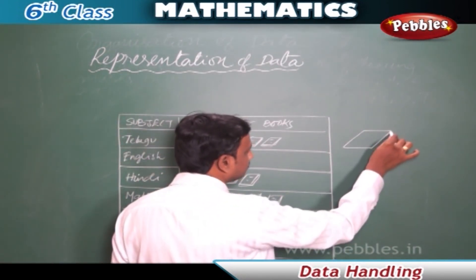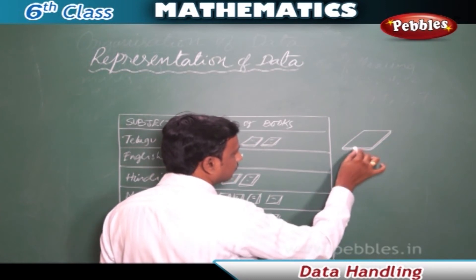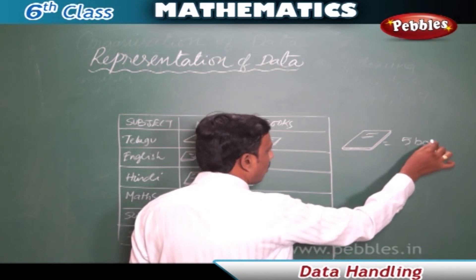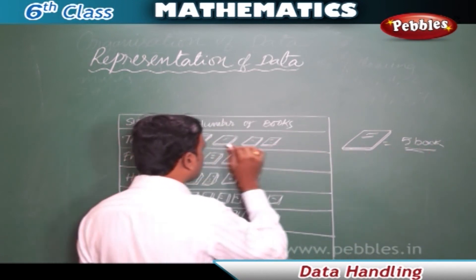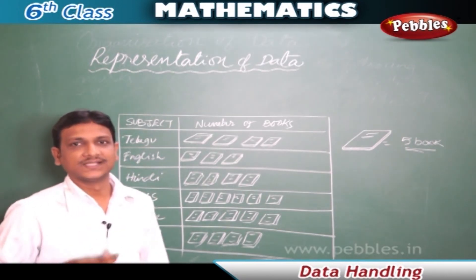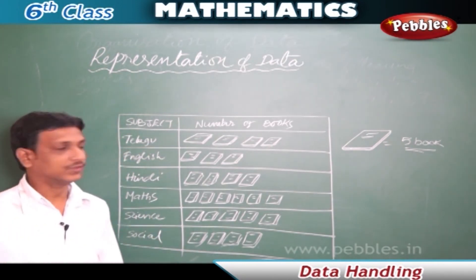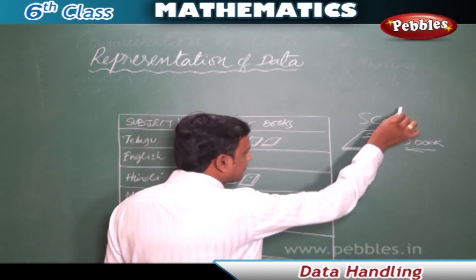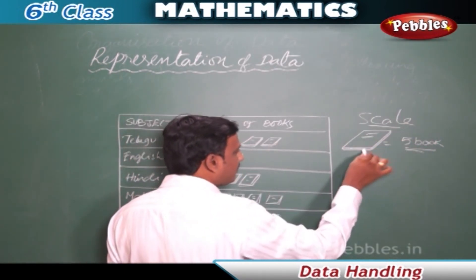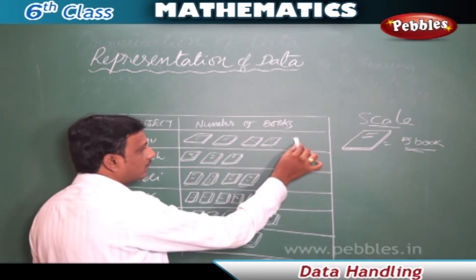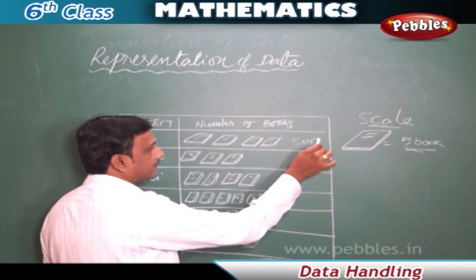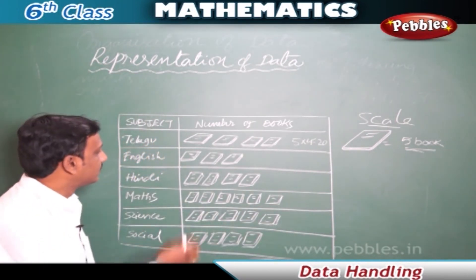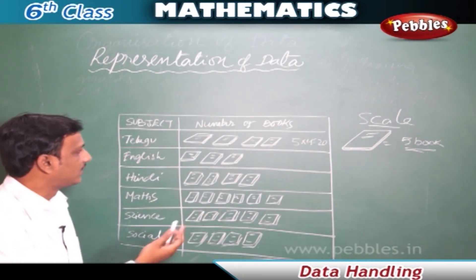In such cases we set a scale — for example, one book picture equals five books. So if we have twenty Telugu books, we draw four pictures (5 × 4 = 20). By setting up a scale we can draw fewer pictures to represent a larger number of items.